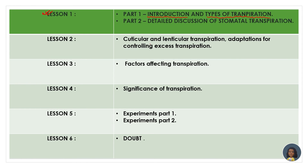Lesson two is going to cover cuticular and lenticular transpiration along with adaptations. Lesson three will cover factors affecting transpiration. Lesson four covers the significance of transpiration. Lesson five again has two parts covering experiments — there are a total of eight to nine experiments on transpiration, divided into two equal parts. At the end we have a doubt class, so please write your doubts in the comment section.